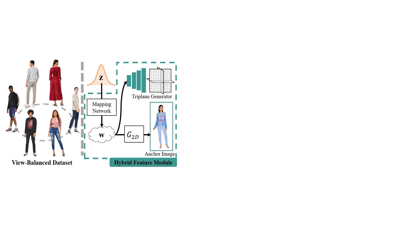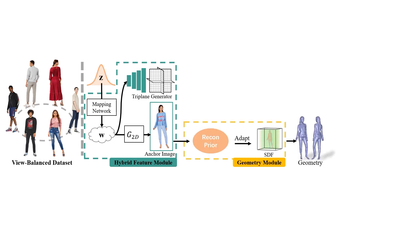Here we introduce our pipeline, which includes three models. First is the hybrid feature representation, using an anchor image to bridge the latent space of HumanGen with the existing 2D generator. Next is the geometry module, which adapts a 3D reconstructor to aid fine-grained detail synthesis.